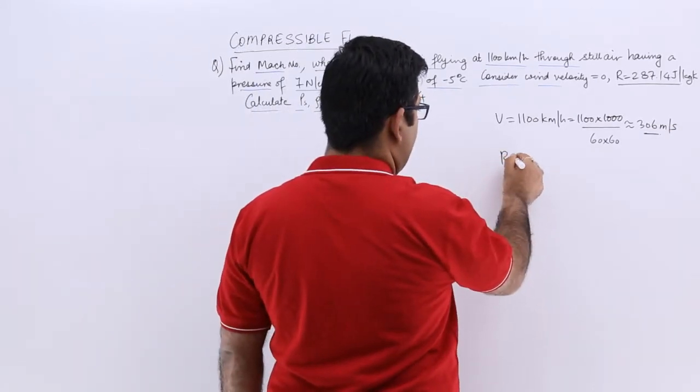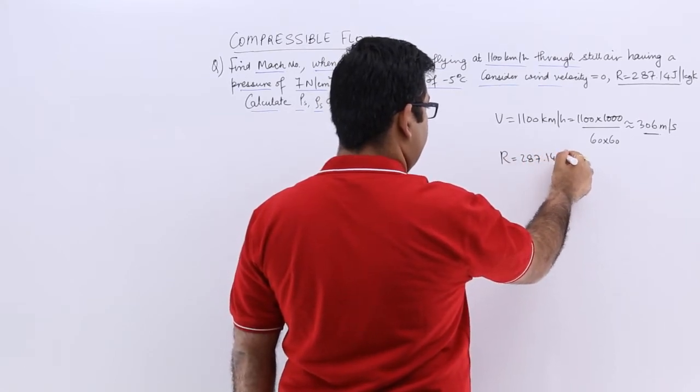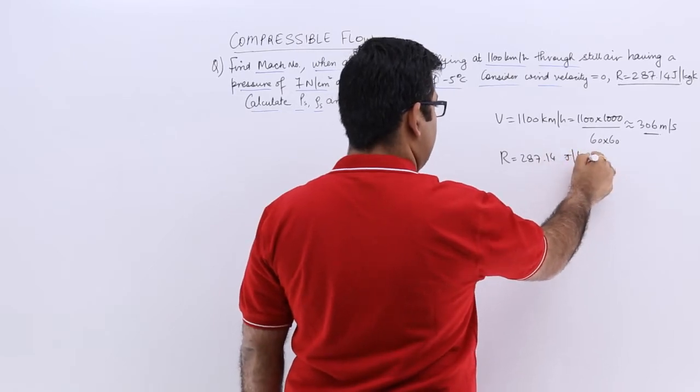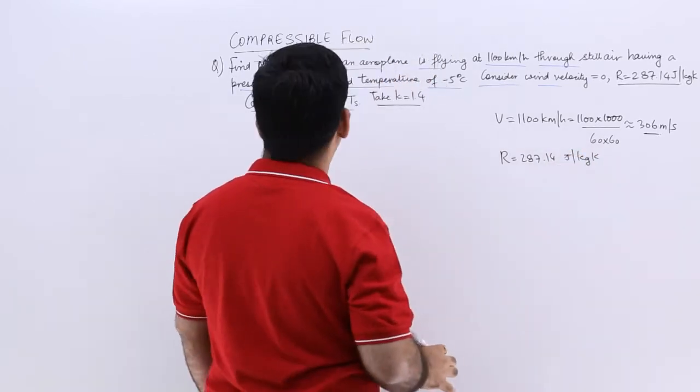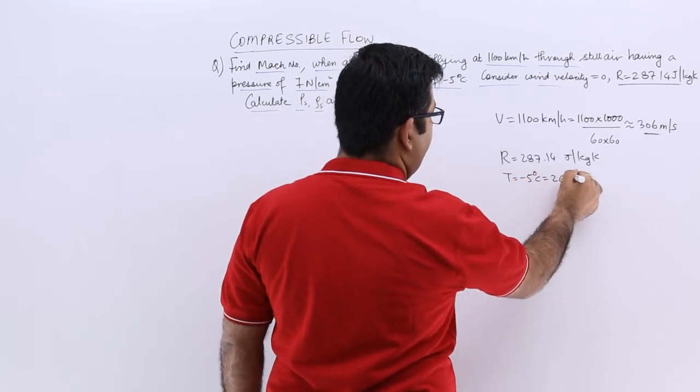Now with this in place, what is the value of R? R is 287.14 joules kg kelvin and the temperature is given to us as minus 5 degree Celsius which is 268 kelvin.